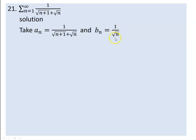1 over radical n — let you take 1 over radical n as the b_n value. Now check the system using the limit comparison test. The nature of convergence of the sequence needs to be determined using limit comparison.